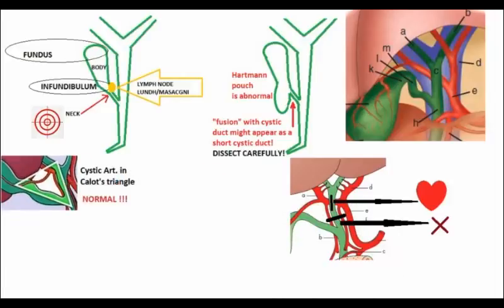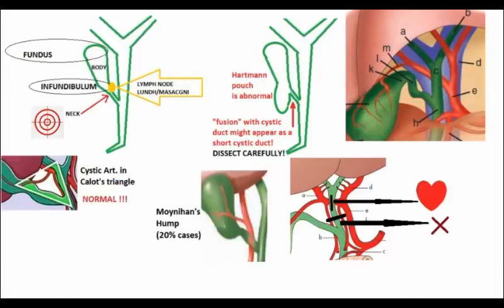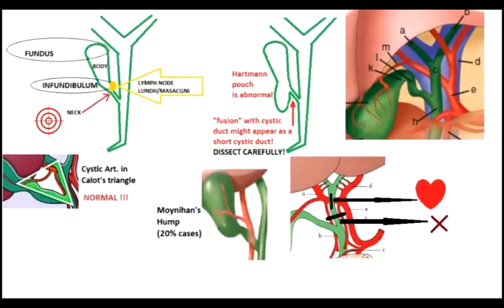In 20% of cases, the right hepatic artery is found in the cholecystohepatic triangle. This is called Moinian's hump. Ischemic necrosis of the liver results if it is clipped. Remember that the right hepatic artery is larger in caliber. If in doubt, lightly gripping it with the Maryland would lead to a color change in the liver and alert the surgeon.